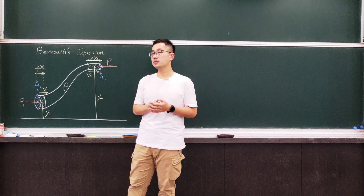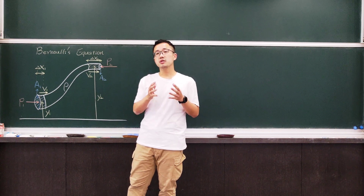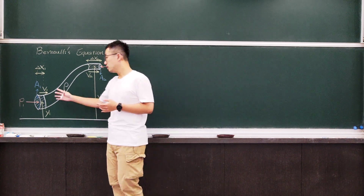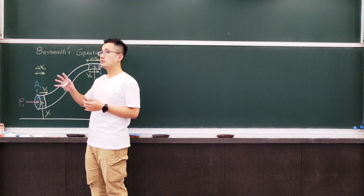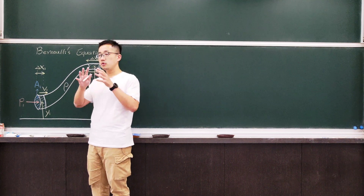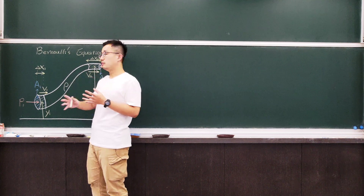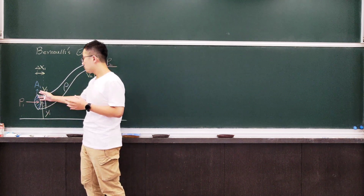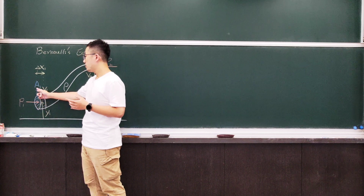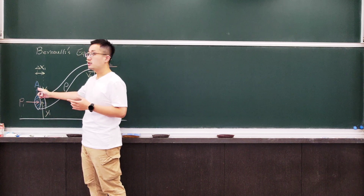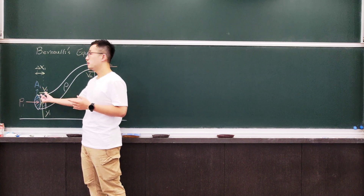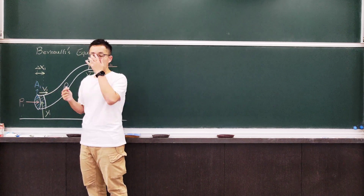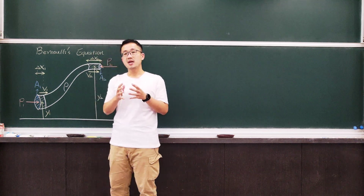Why? Because the volume needs to be conserved. Let's look at this volume and pick up a really small portion of the whole system. The volume is equal to the cross-sectional area A1 times its width, which is delta x1.